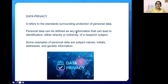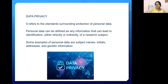Data privacy refers to the standards surrounding protection of personal data. Personal data can be defined as information that can lead to identification, either directly or indirectly, of a research subject. Some examples of personal data are the subject's name, initials, address, and genetic information. Subject names are not mentioned in most clinical research documents in order to protect privacy and confidentiality.